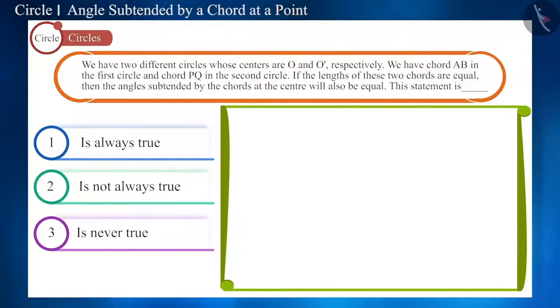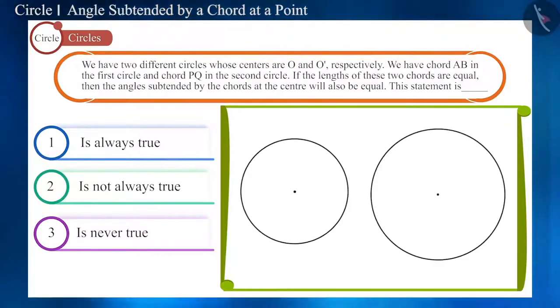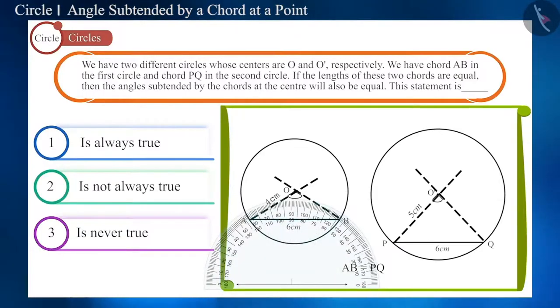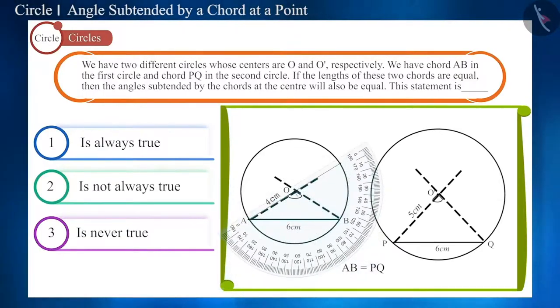Let us suppose these are two circles whose centers are O and O' respectively and whose radii are 4 cm and 5 cm respectively. Now, we will draw chords of length 6 cm in both circles. Name the chords AB and PQ respectively. Make angles subtended at the center by these chords and find their measurement with the help of a protractor.